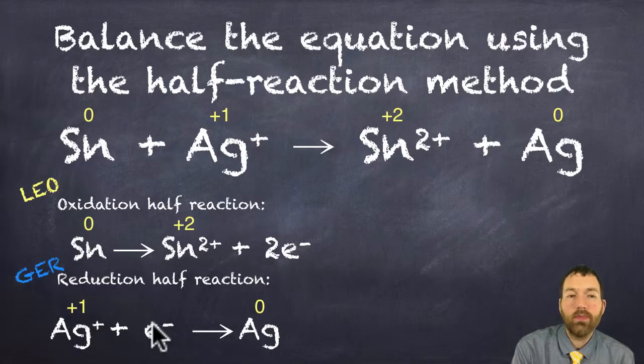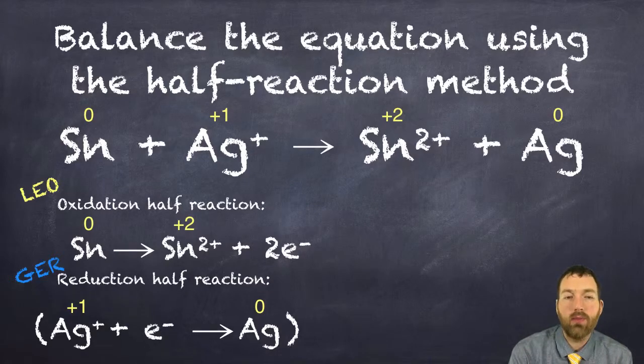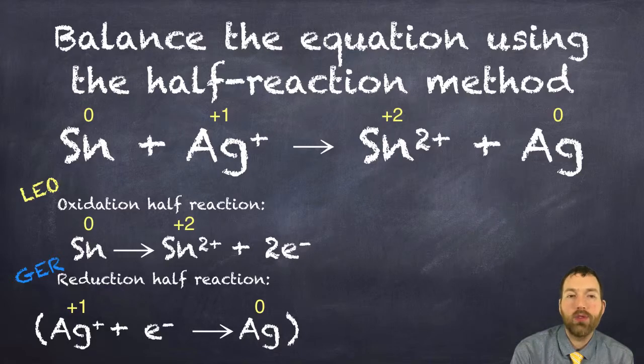That can't be, so what we do is we put brackets around the bottom one here and we need to multiply the whole half reaction by some coefficient that's going to bring our electron number up to two. In this case it would be two.